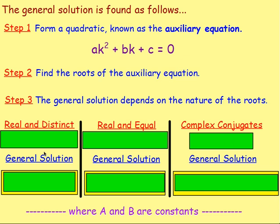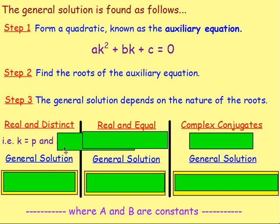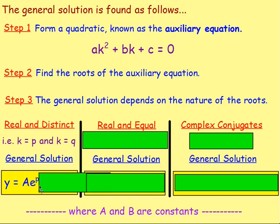Looking at real and distinct roots: if the roots are real and distinct, you will have two values for k — let's say k equals p and k equals q. The general solution of the second order differential equation will then be of the form y equals ae to the power of px plus be to the power of qx. That is what it will look like if the roots are real and distinct.